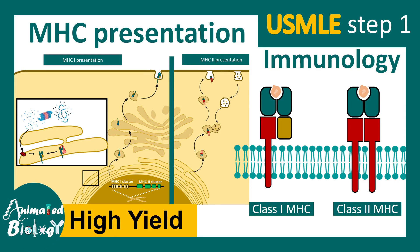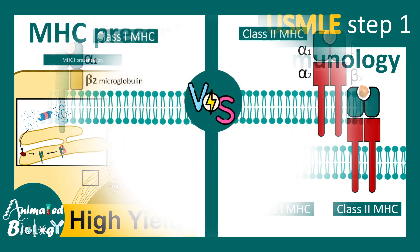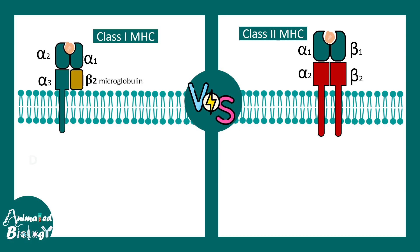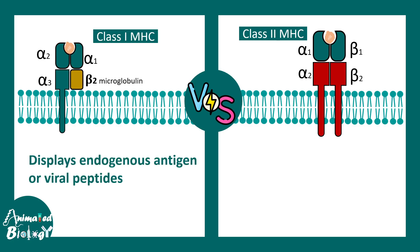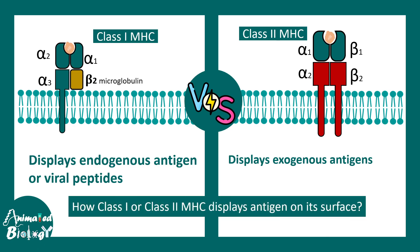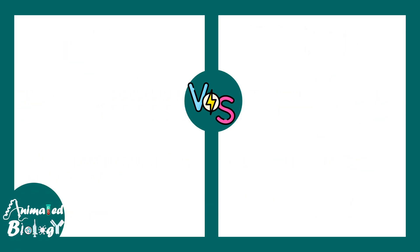In this video we'll talk about MHC presentation. We will look at how class 1 and class 2 MHCs are displayed on the cell surface and processed by the cellular machinery. Class 1 MHC displays endogenous antigens or viral peptides, whereas class 2 MHC displays exogenous antigens. The question is how antigens are loaded onto the MHC and how they are displayed on the cell surface.